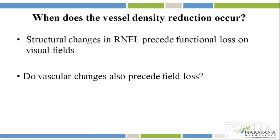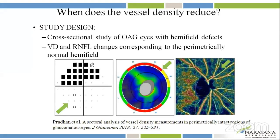If there is a vessel density reduction in glaucoma, when does this vessel density reduction occur? We know that the structural changes in RNFL precede functional loss to visual fields, but do the vascular changes also precede visual loss? To answer this question, we conducted a cross-sectional study on primary open-angle glaucoma eyes with defects restricted to only one hemifield, and studied the RNFL and vessel density changes corresponding to the perimetrically normal hemifield.